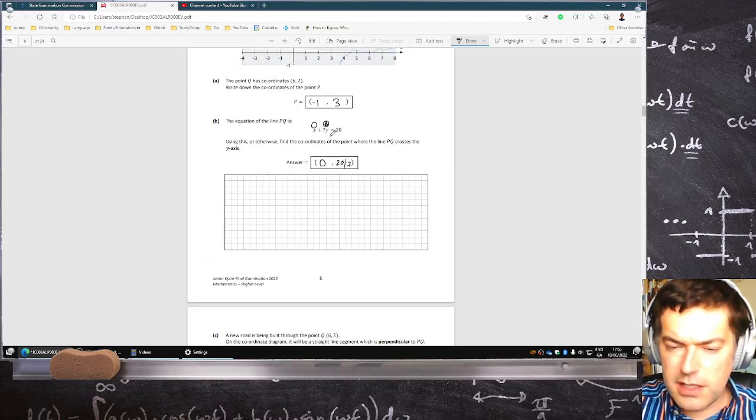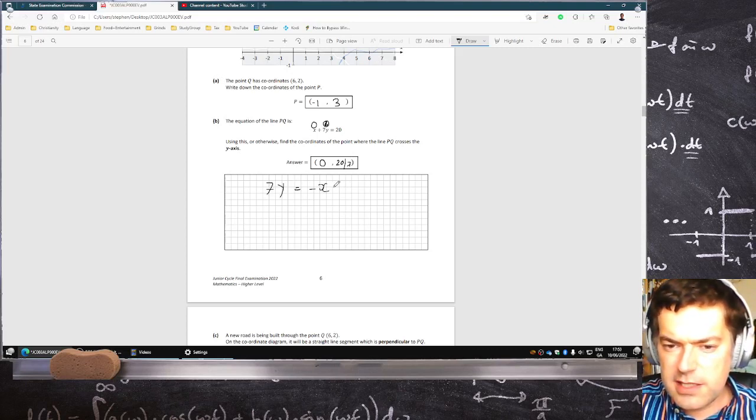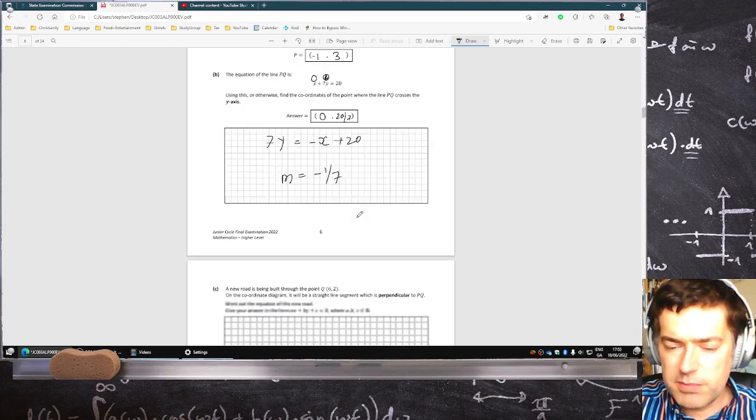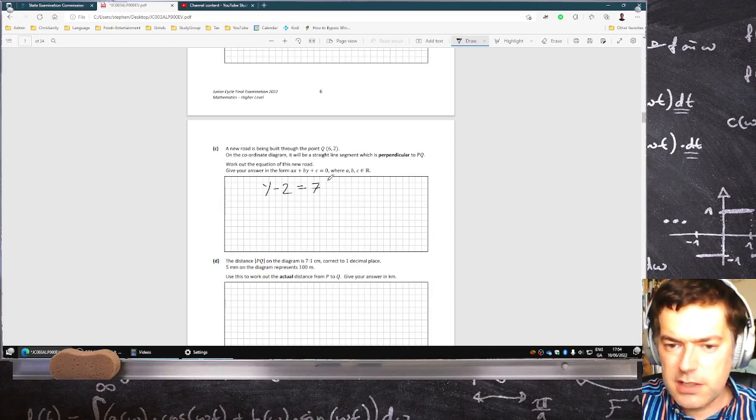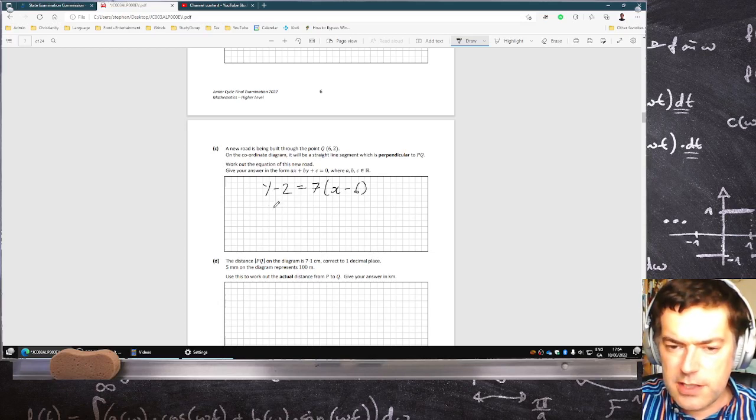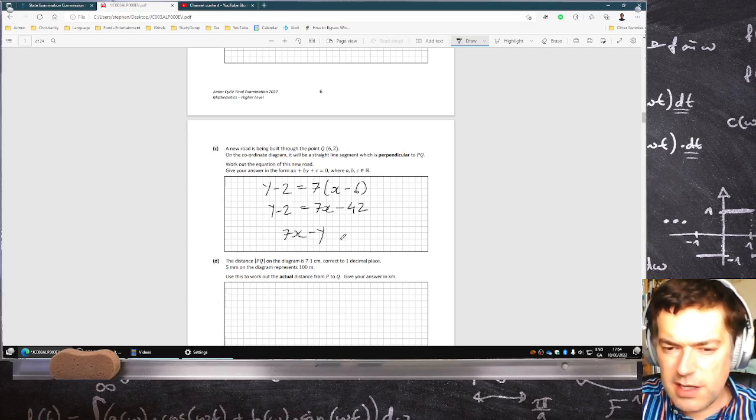Well, we'll have to get the slope first here. So by rearranging this, we can have 7Y equals minus X plus 20. So you divide by 7, you can see that the slope is minus 1 over 7. So for the perpendicular line, it'll be 7. So that's Y minus Y1 equals M times X minus X1. So that's Y minus 2 equals 7X minus 42. So that's 7X minus Y minus 40 equals 0.